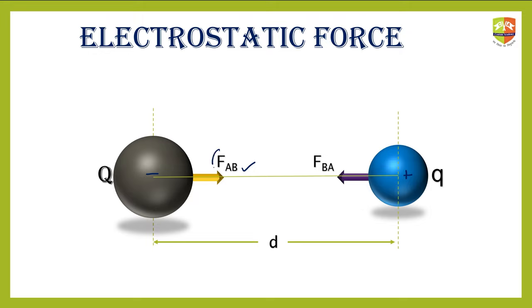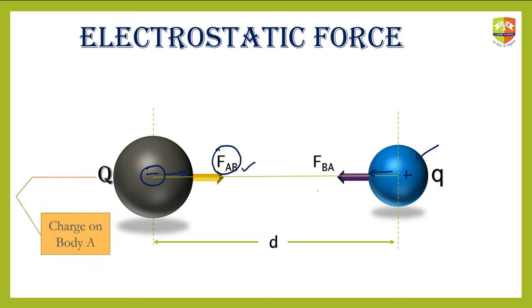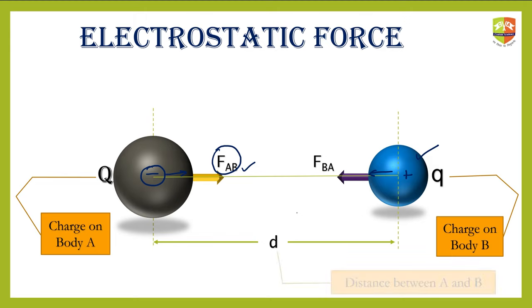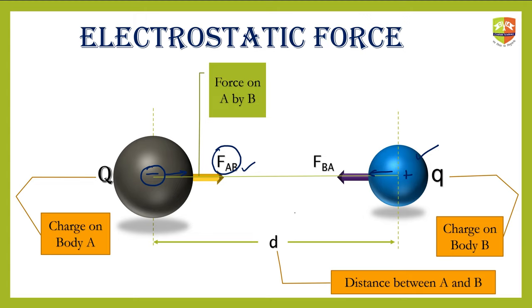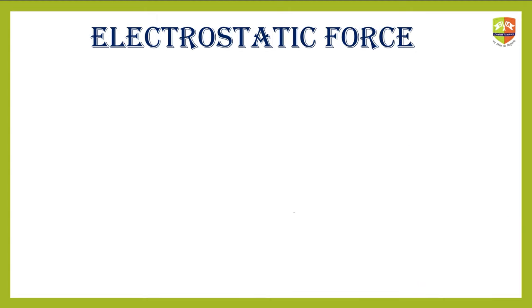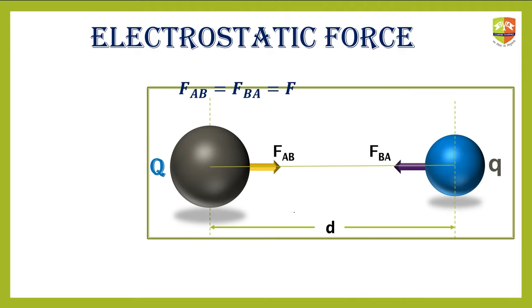One force is applied by the positive charge on the negative charge, pulling it towards the right, while the positive charge is pulled towards the left. This is a fundamental force existing in nature — the moment there is charge on two particles, they attract or repel each other. The charge on body A, charge on body B, and distance D between them determine the force on A by B and the force on B by A.